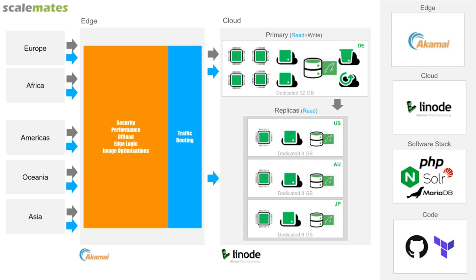So I looked at the Linode data center map and decided to set up in three locations: the US, Australia, and Japan. I set up a replica — the primary remains in Germany. All edits and database changes are done in Frankfurt, but I create a copy kept in sync almost in real time in the US, Australia, and Japan.